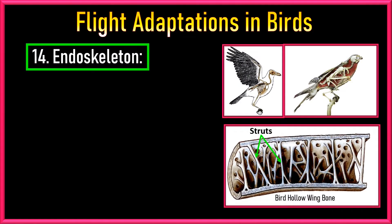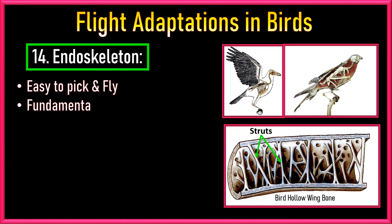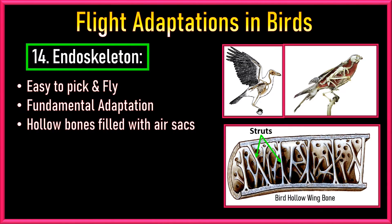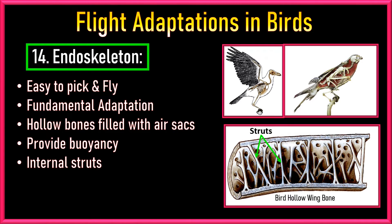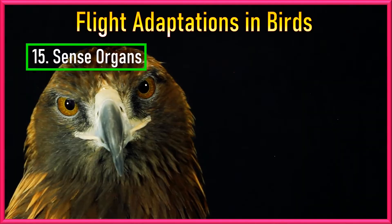Number 14: Endoskeleton. Over the course of time, birds have evolved a skeleton that is lightweight and hence easy to lift and fly. These lightweight bones are one of the fundamental adaptations for flight. Birds have hollow bones filled with air sacs, reducing overall body weight and providing buoyancy. These hollow bones are also reinforced with internal struts to maintain structural strength while minimizing bone mass — lightweight and easy to fly is the principle.